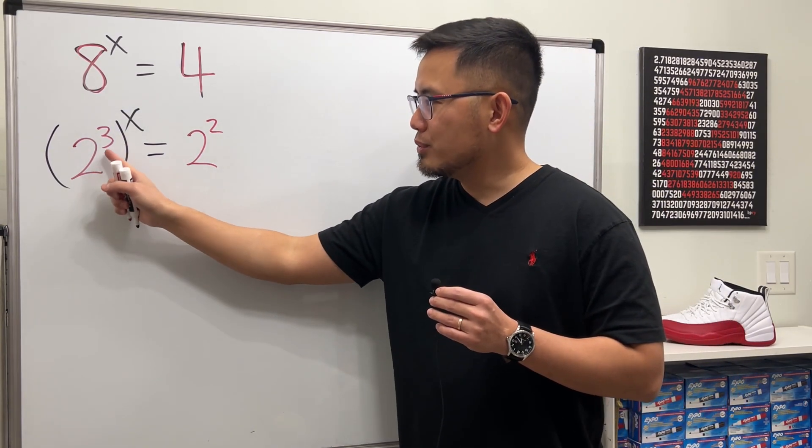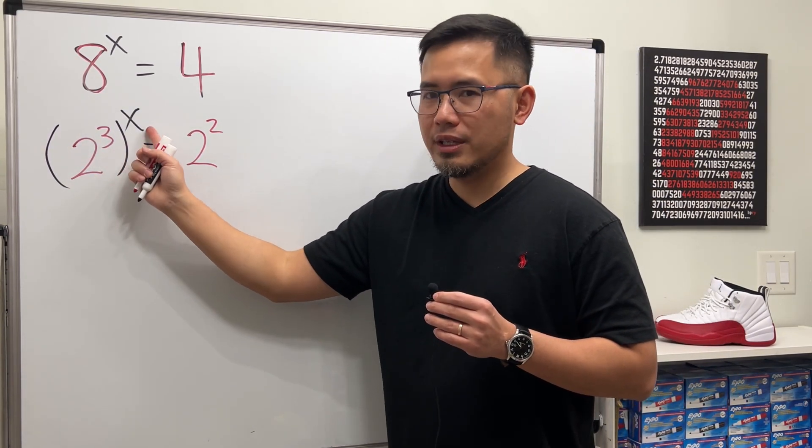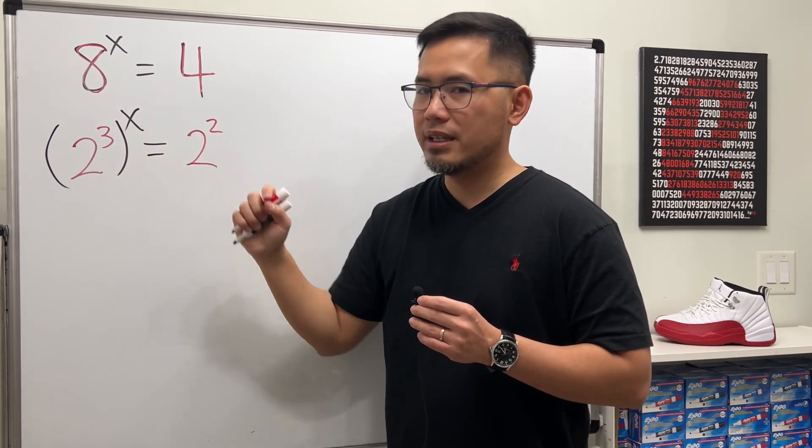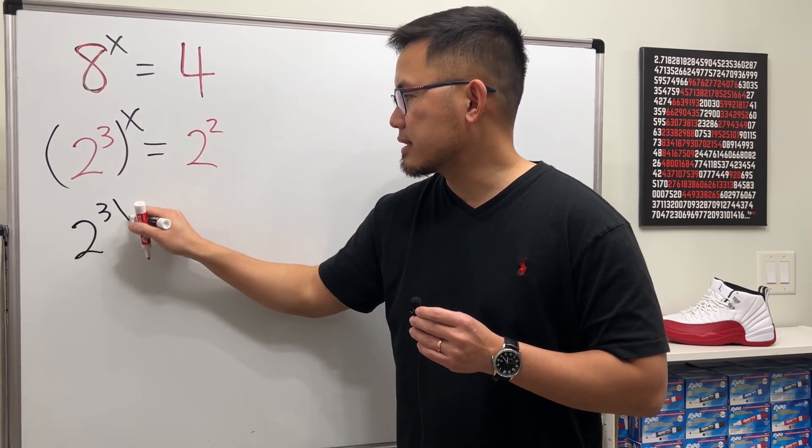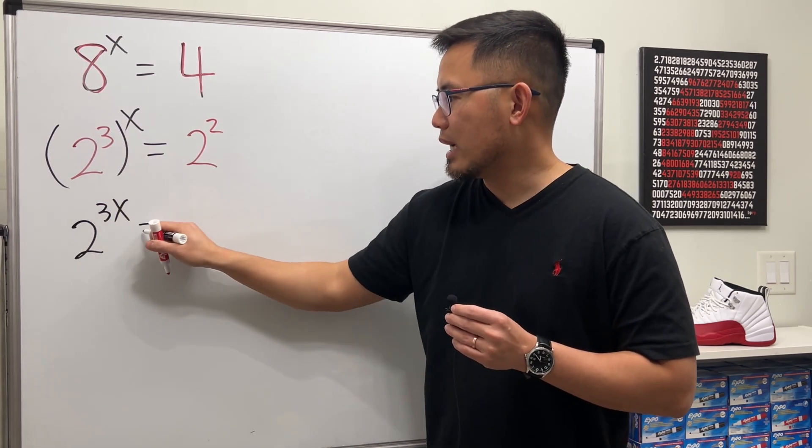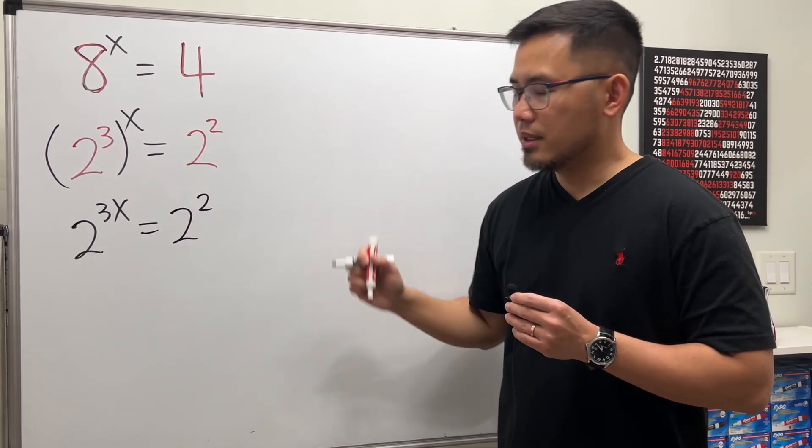Now here we have 2 to the third in the parentheses and then raised to the exponent, we can just multiply the exponents. So on the left hand side we have 2 to the 3x, and then on the right hand side we have 2 to the 2.